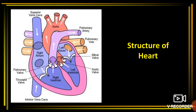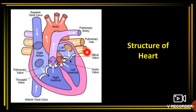So you can see the four chambers: right atrium (1), right ventricle (2), left atrium (3), and left ventricle (4). The associated blood vessels are: pulmonary vein, pulmonary artery, superior vena cava, inferior vena cava, and the aorta.